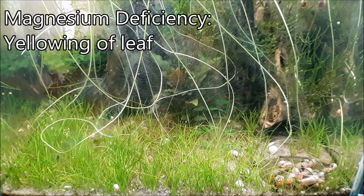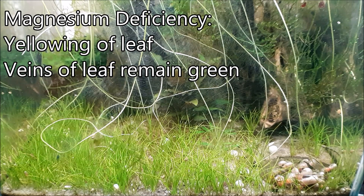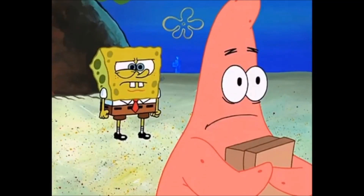Magnesium is next. Magnesium plays a part in photosynthesis and helps produce chlorophyll, which creates the green color of the leaf. So if you have a magnesium deficiency, the leaf is going to turn yellow — similar to nitrogen. But the key difference is the veins of the leaves will stay green. You're looking for a yellow leaf with green veins, especially on the older leaves, because the plant pulls magnesium out of old leaves and pushes it into the new growth.